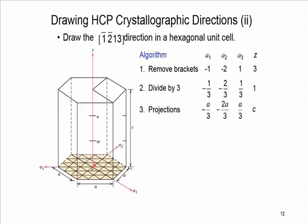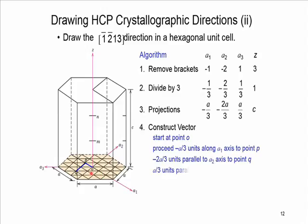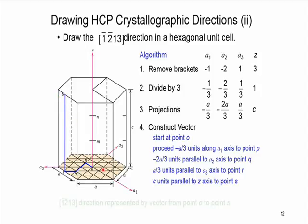Starting from the origin, we go minus a/3 along the a1 axis, then minus 2a/3 along a2, then plus a/3 along a3, and then plus c along the z-axis. This gives us the head point. The final step is connecting the origin to the head point, as shown. More examples regarding HCP and cubic crystallographic directions and coordinates will be practiced inside the class.